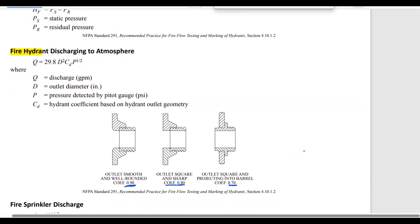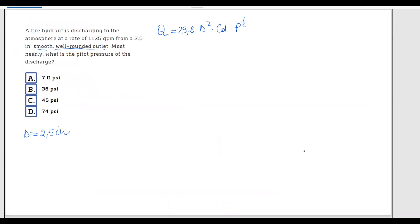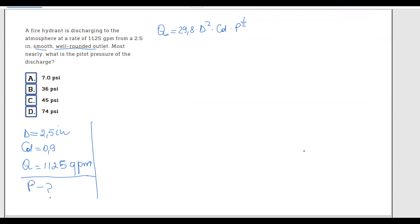A smooth well-rounded outlet gives us CD equals 0.9. The discharge Q is 1,125 gallons per minute. We need to calculate the pitot pressure P.